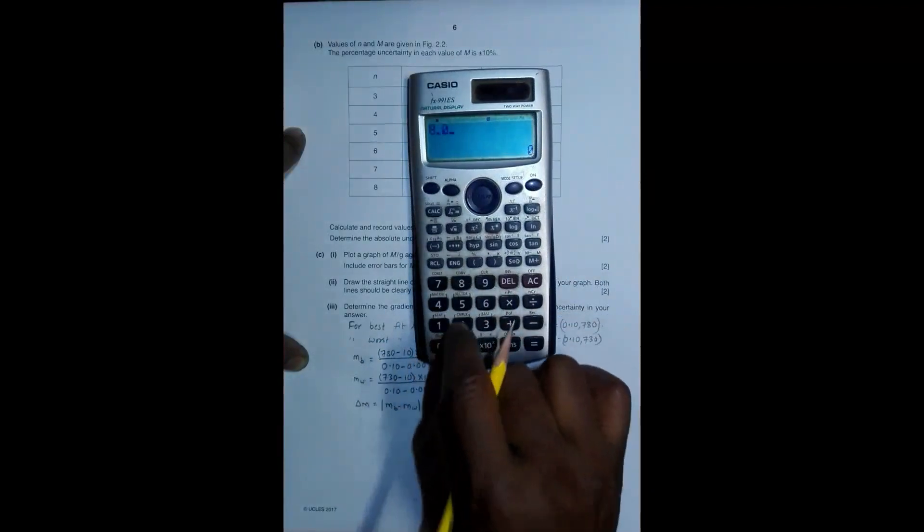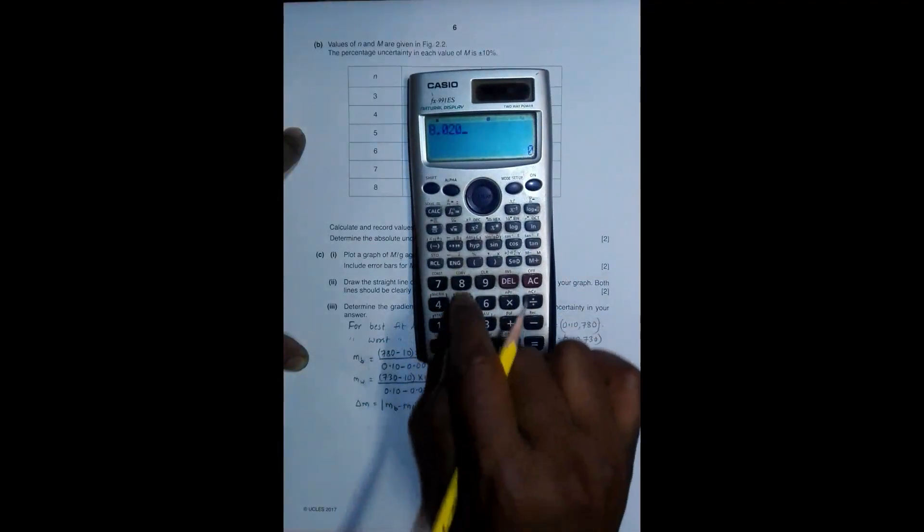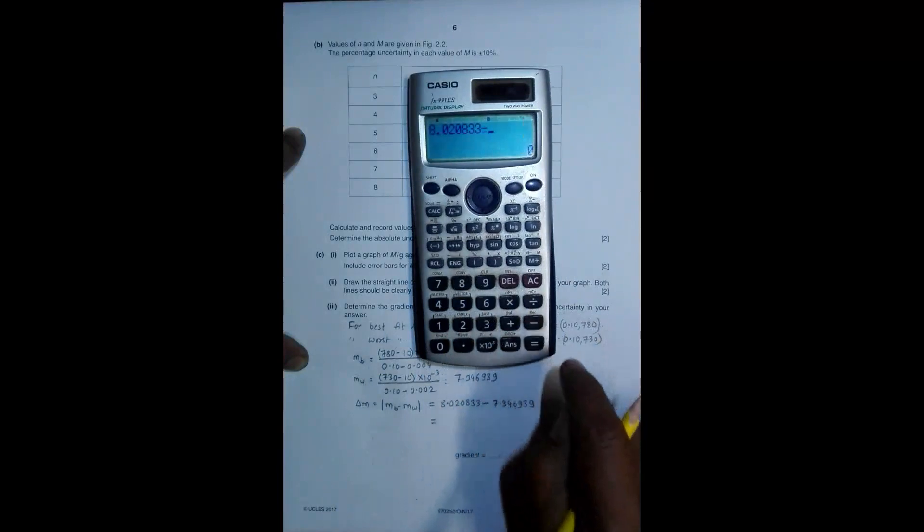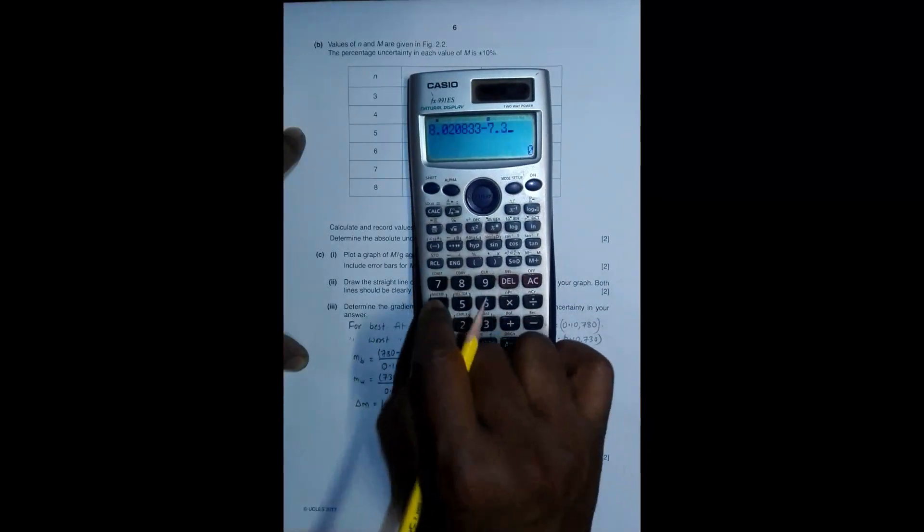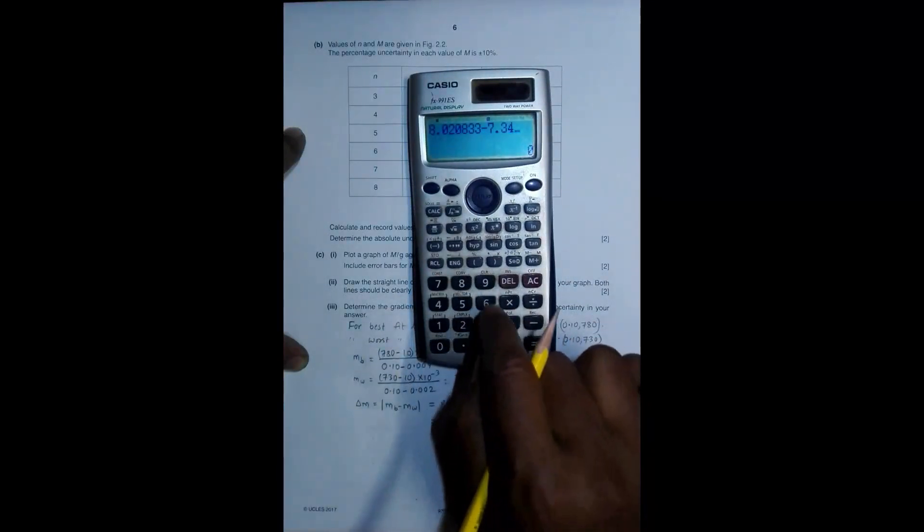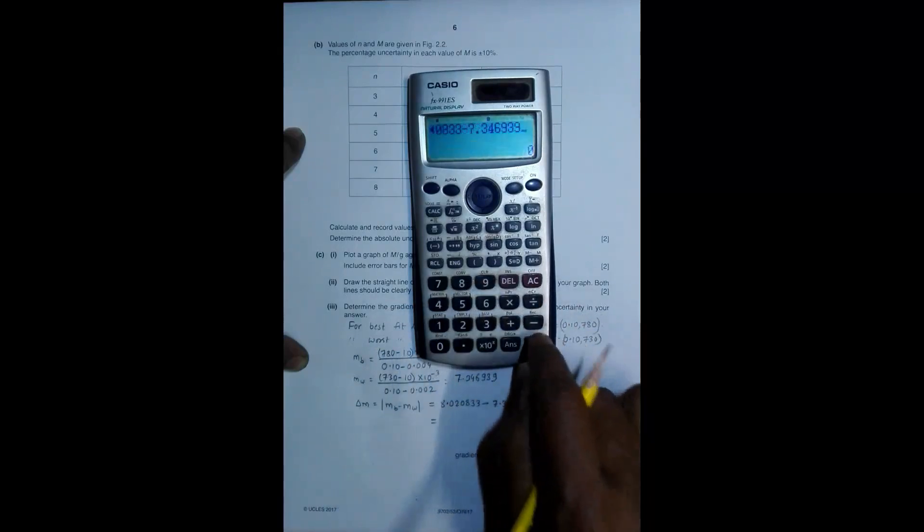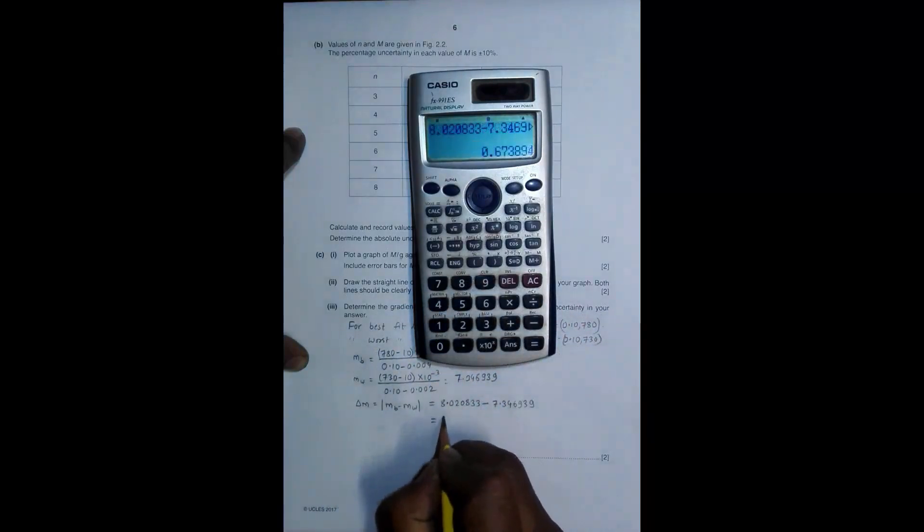8.020833 minus 7.346939. Equal to, it becomes 0.673894.